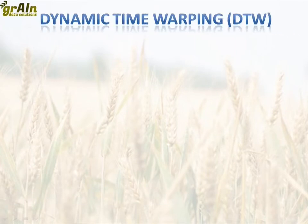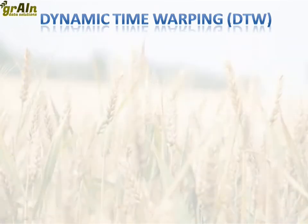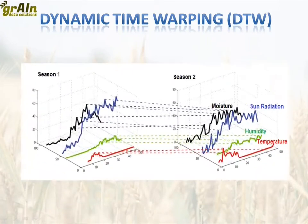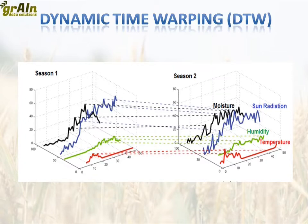One good solution for such complex problems is a method called dynamic time warping, or DTW. It's a data science approach widely used in finance for predictions and finding trends. It's very applicable to ag problems. The intuition behind DTW is finding similarities for all of those temporal features among farming seasons.